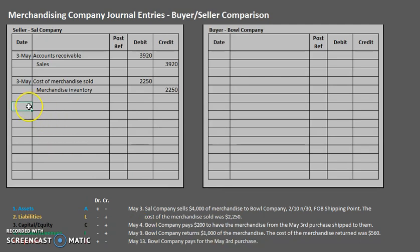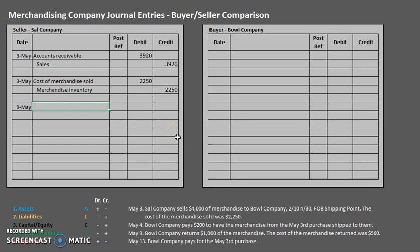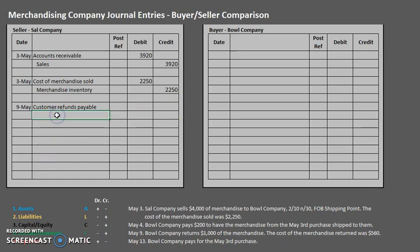On May 9th, the buyer returns $1,000 of the merchandise, and we are also given the cost of the merchandise returned. Here's where things get a little different from prior methods. Instead of using our typical accounts, we are going to be using some different account names. We are going to be debiting Customer Refunds Payable — almost acting like an allowance account to decrease that amount — and our credit is going to be to Accounts Receivable.